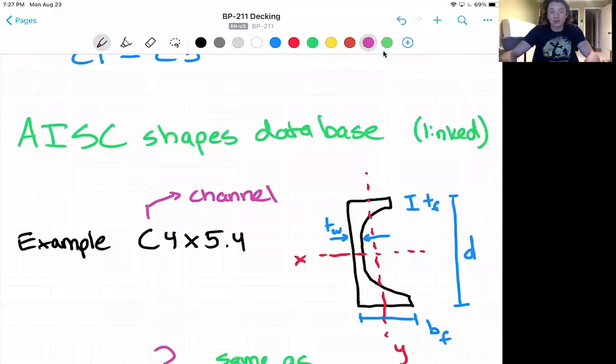We're going to do an example with the C4 by 5.4 channel crossbeam steel crossbeam which looks like this to the right.